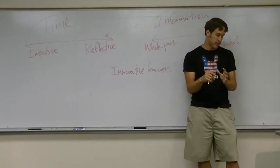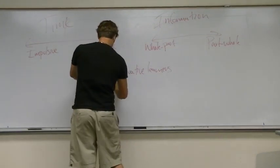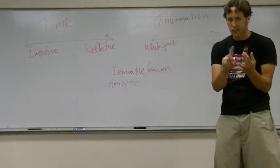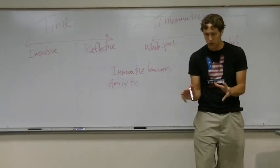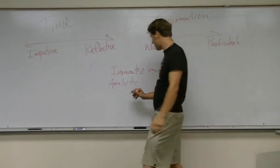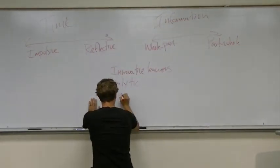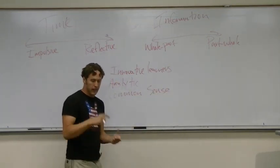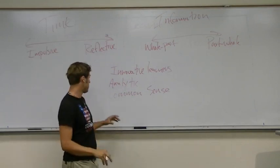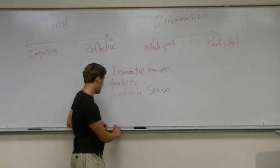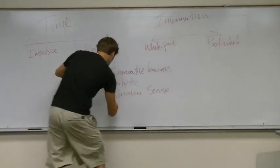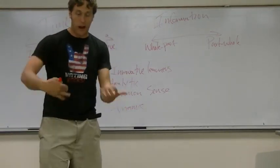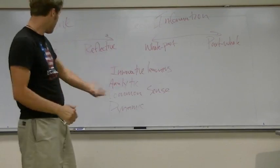They're analytic learners. An analytic learner is somebody who's interested in clear, concise, logical explanations. They trust experts, and they like everything to make sense and fit together. They're common sense learners, and they demand that things are practical, that they have immediate utility, and that they're very relevant. And then, the last, what does it say, oh, dynamic learners. The last are dynamic learners. And a dynamic learner is somebody who learns by doing, by getting in and getting it done, like kinesthetic.